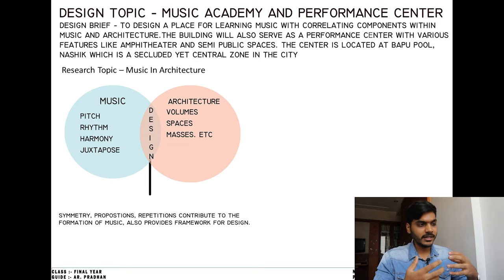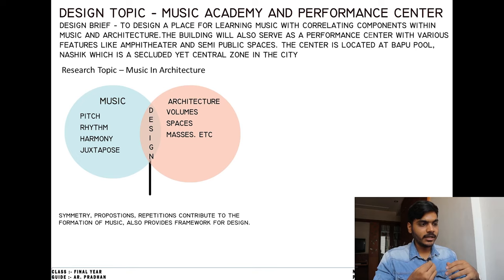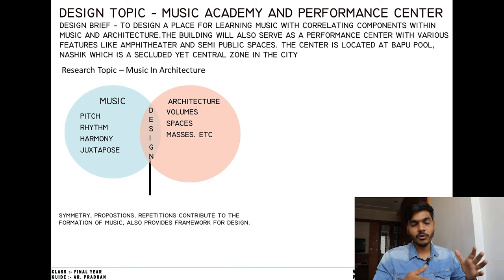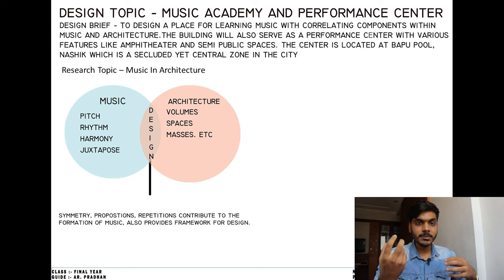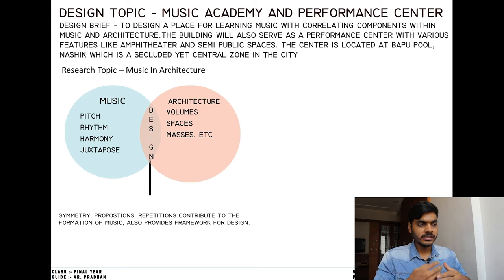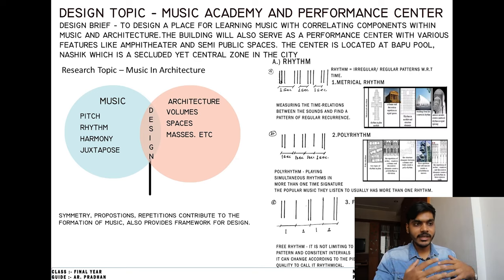Some of the elements common in music and architecture are symmetry, proportions, and repetitions, which contribute to creating a framework for design or composing. Some characteristics similar to both music and architecture are pitch, rhythm, harmony, and juxtaposition — which we use in basic design, texture, and planning. These are some of the elements I jotted down in this Venn diagram.